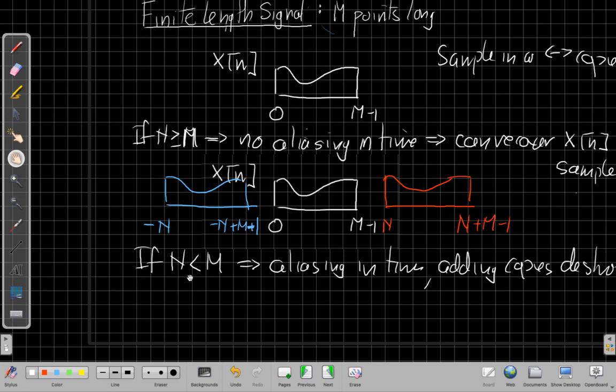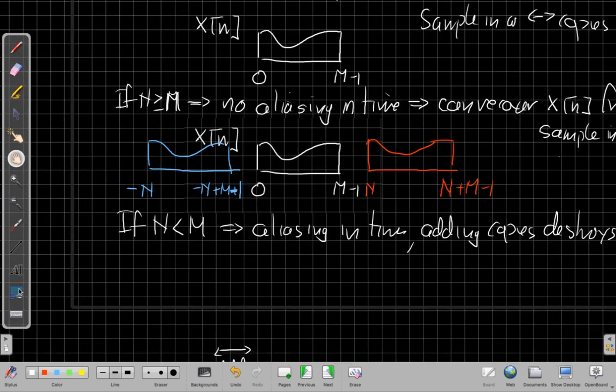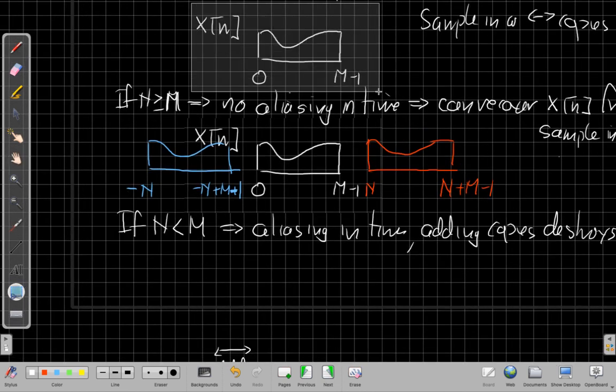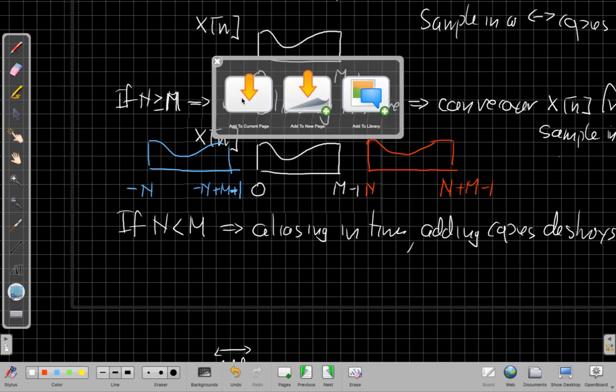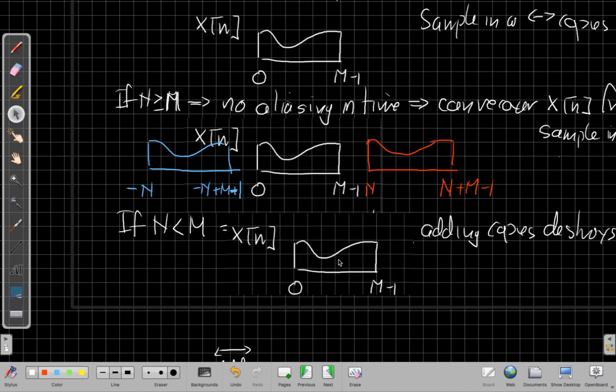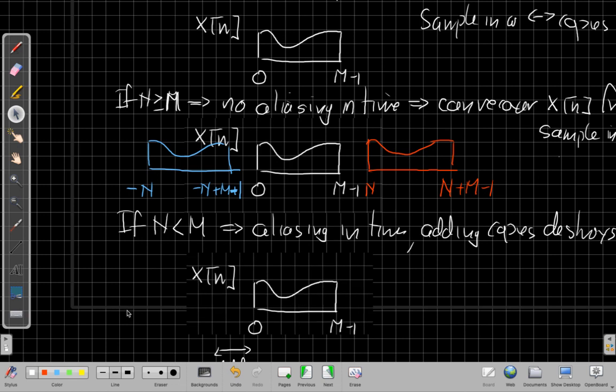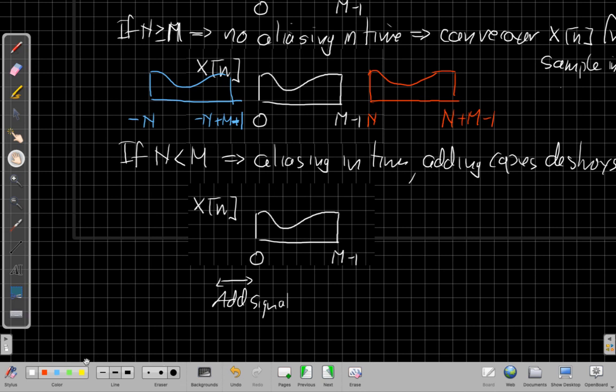So what would that look like in these sort of cartoon pictures? Let me bring a new copy of my signal down. But now, if n is less than m, that means this left edge will be inside the signal here. So I have something that looks like this, and they'll add up and overlap here.